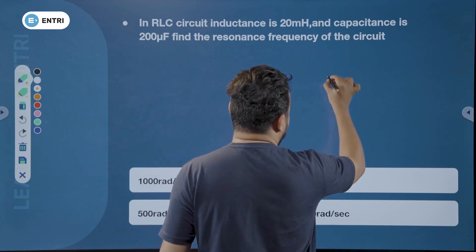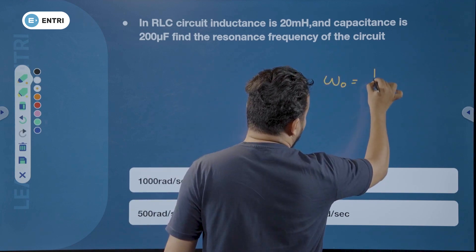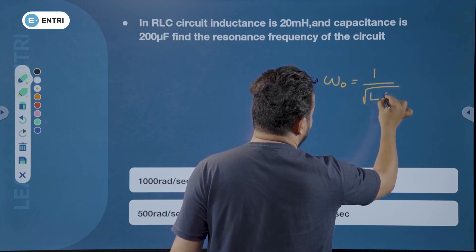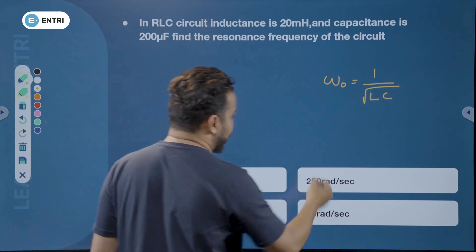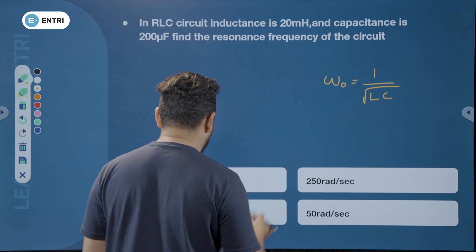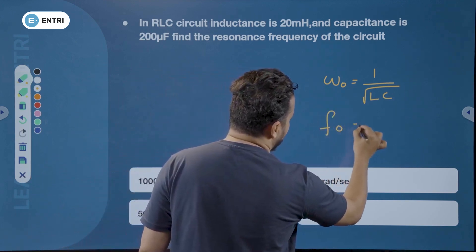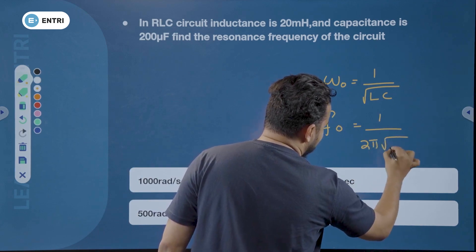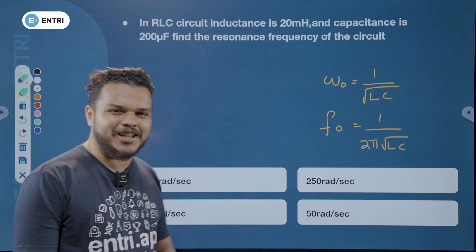Resonance frequency is equal to 1 by root LC, that is the angular resonance frequency. The resonating frequency f₀ is equal to 1 by 2π√(LC).